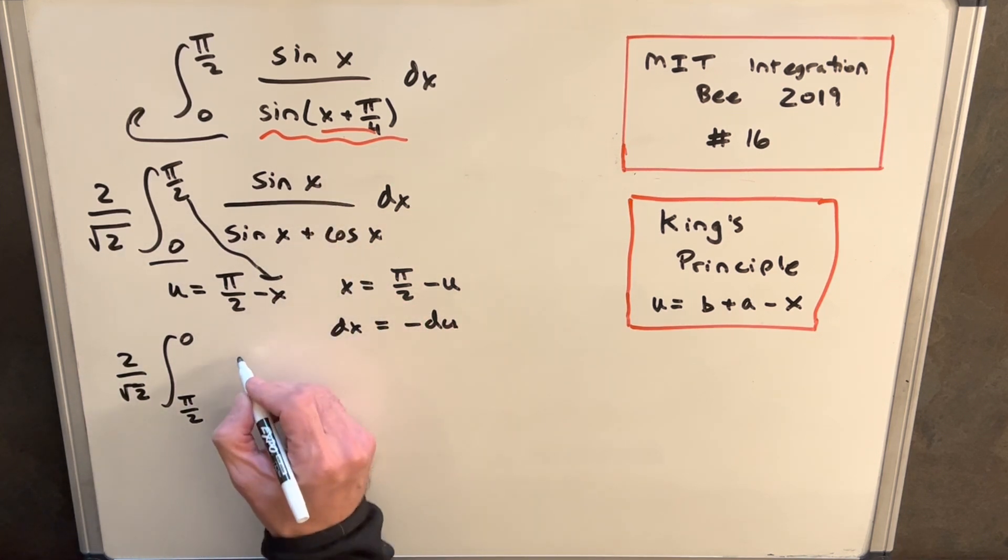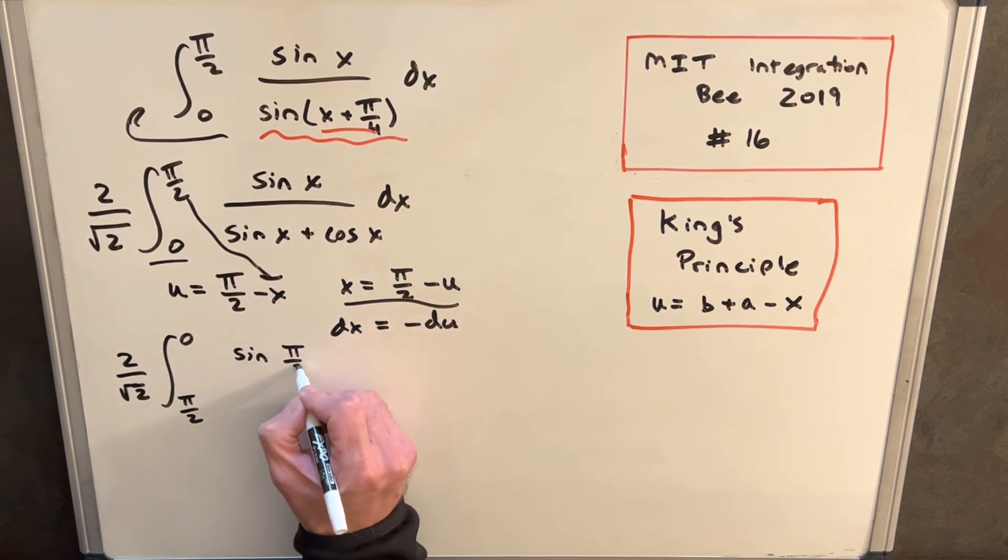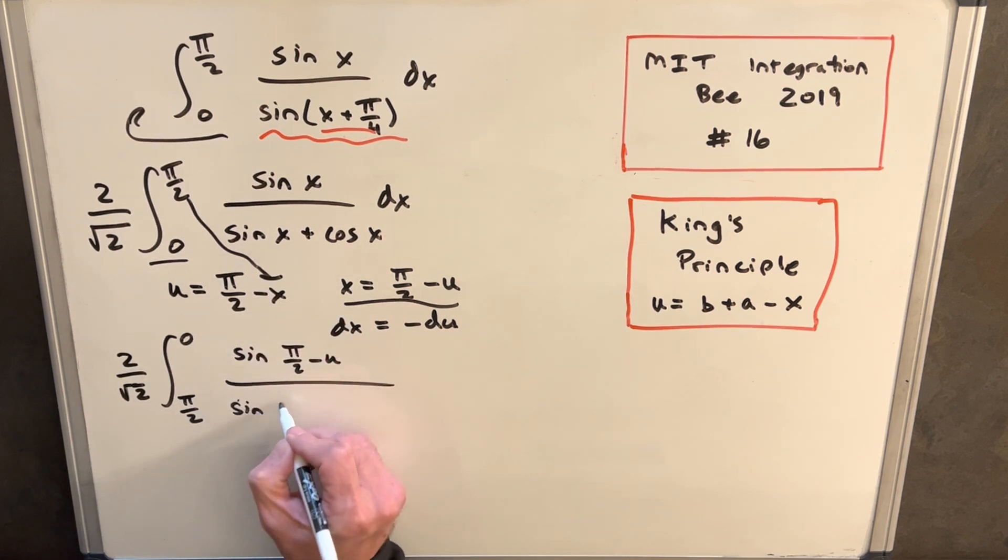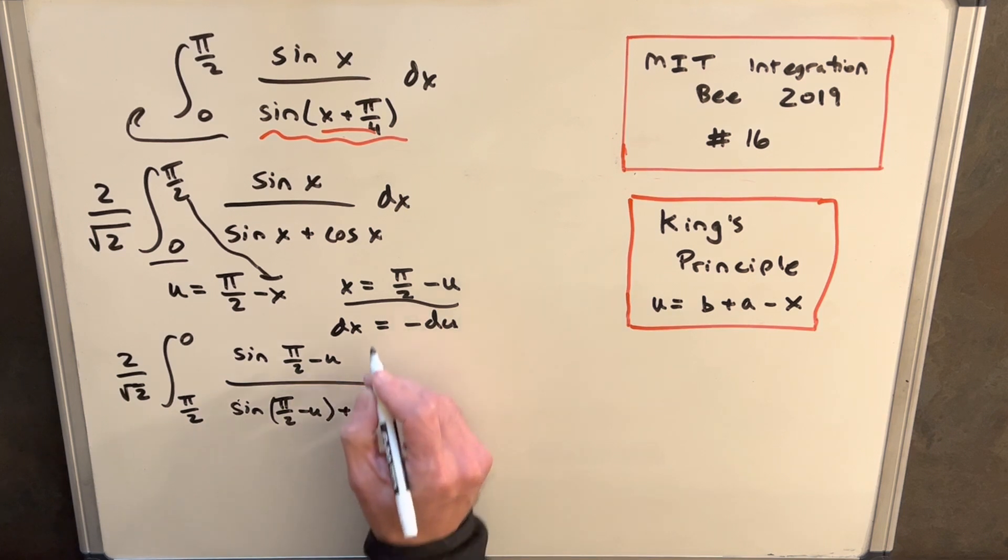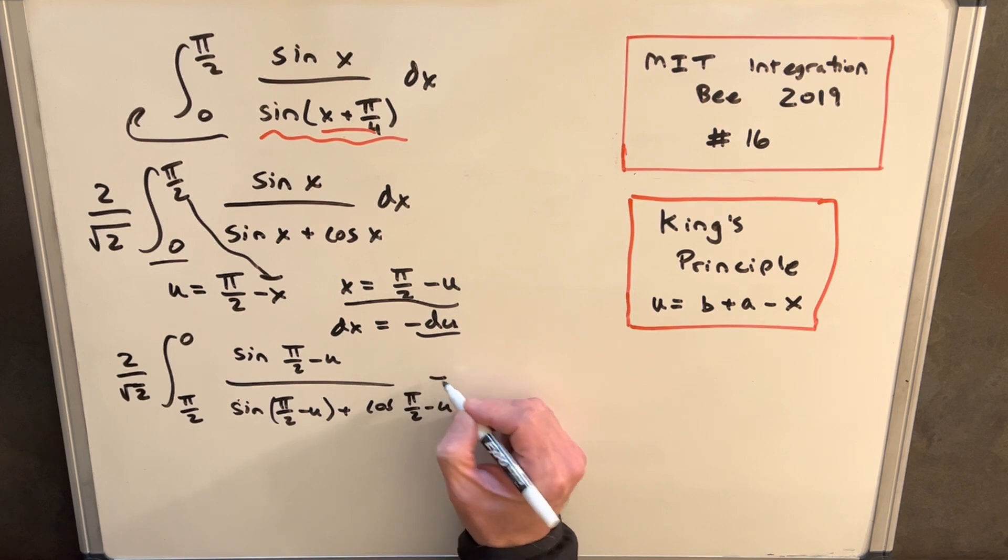Then sine of x is going to be, plugging in our x values, sine of pi over 2 minus u. Then again, same thing here, sine of pi over 2 minus u plus cosine pi over 2 minus u. And notice our du is going to have a minus sign on it.